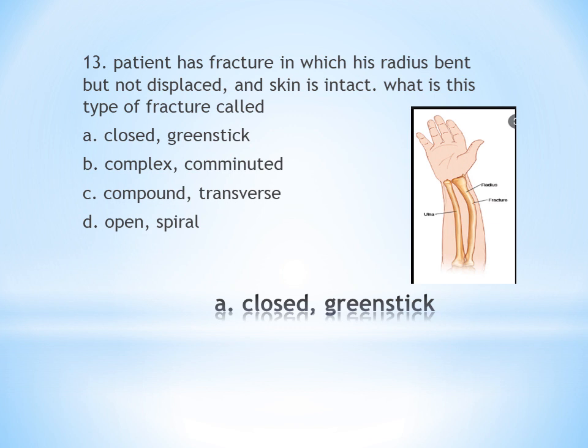A patient has a fracture in which the radius is bent but not displaced, and the skin is intact. What type of fracture is this? A. Closed greenstick. B. Complex comminuted. C. Compound transverse. D. Open spiral. Since the skin is intact, it is a closed type fracture. The bone is bent — a bending type — which is a greenstick fracture. So the answer is A, closed greenstick.